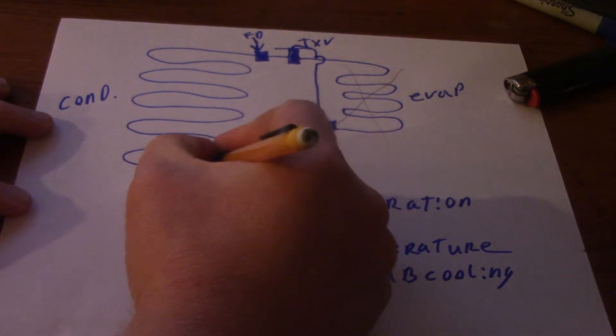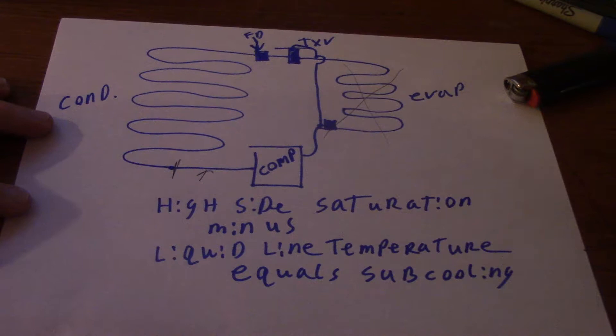Refrigerant is going to go here. In this part is going to be your discharge line where it's a high pressure, high temperature, superheated vapor.